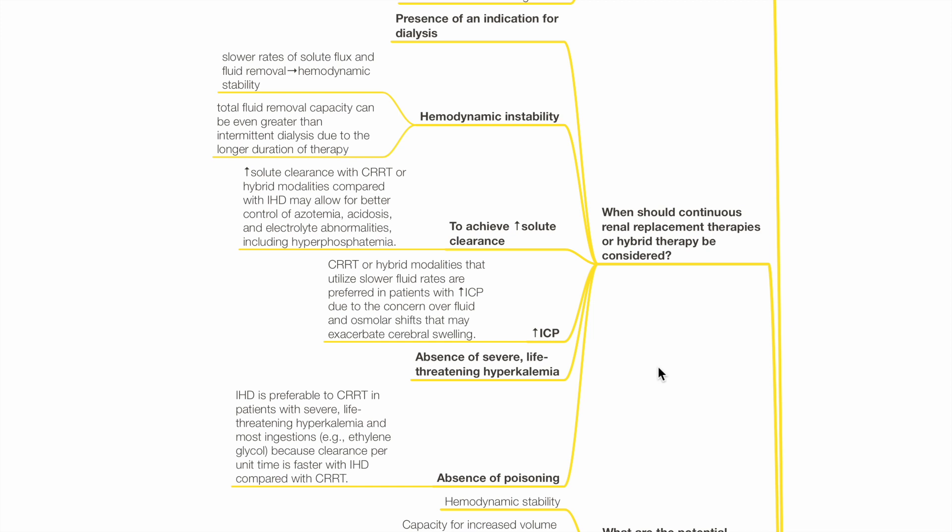When should CRRT or hybrid therapies be considered? They should be considered in the presence of an indication for dialysis, when hemodynamic stability is of concern, to achieve high solute clearance in cases of raised ICP, as slower fluid rates in CRRT or hybrid therapies result in less fluid or osmolar shifts that may exacerbate cerebral swelling. Absence of severe life-threatening hyperkalemia and absence of poisoning, as IHD is preferred to CRRT in patients with severe hyperkalemia and ingestions because the clearance per unit time is faster with intermittent hemodialysis compared with CRRT.